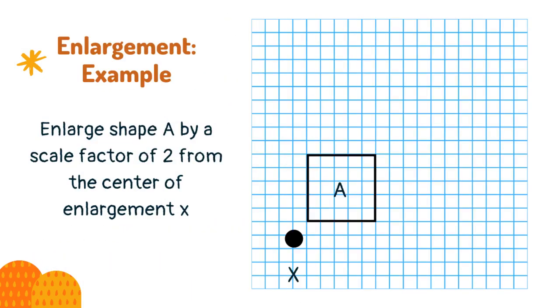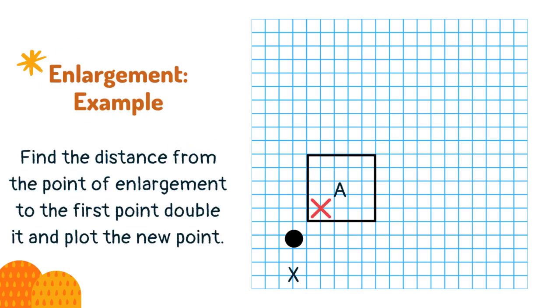Enlarge shape A by a scale factor of 2 from the centre of enlargement X. Find the distance from the point of enlargement to the first point, double it, and plot the new point. The first corner is 1 up and 1 across, and this becomes 2 up and 2 across.